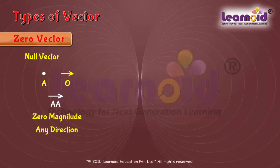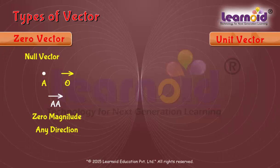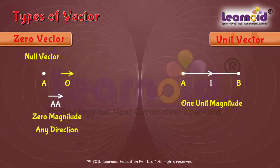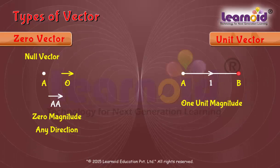Second is the Unit Vector. A vector whose magnitude is unity, that is, one unit, is called a unit vector. The unit vector is denoted by a cap.